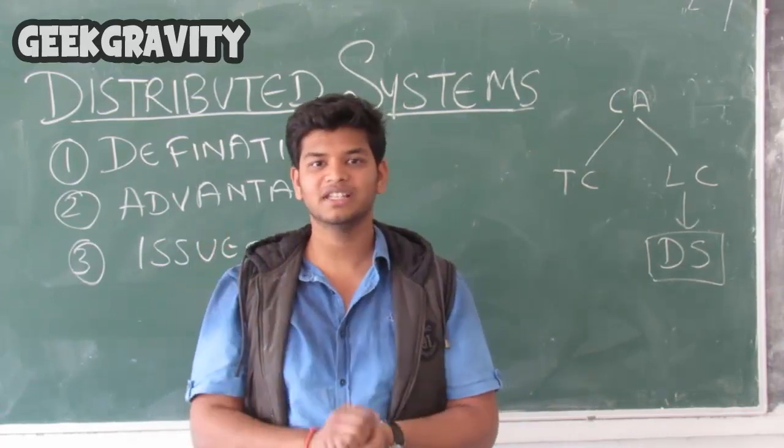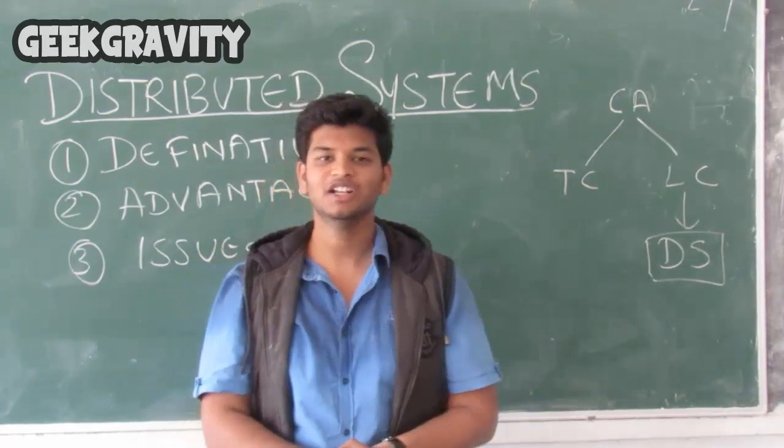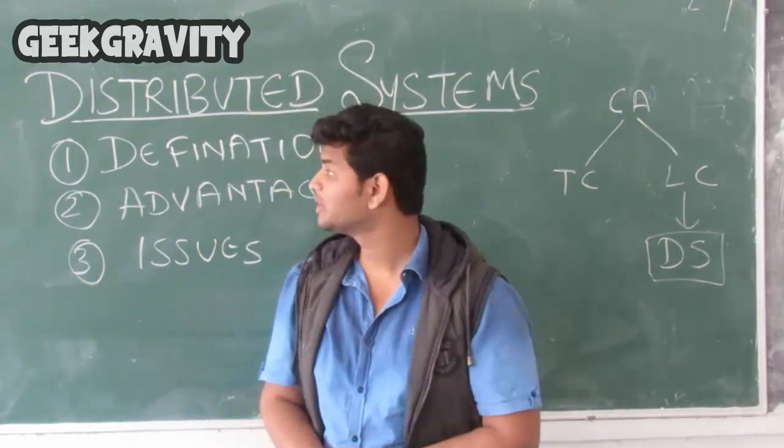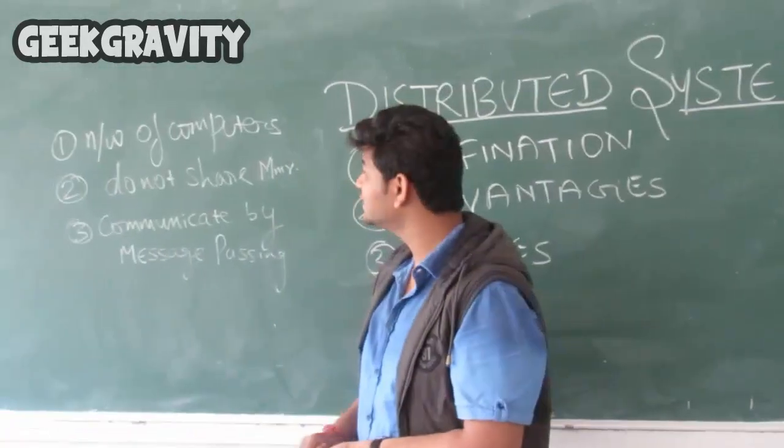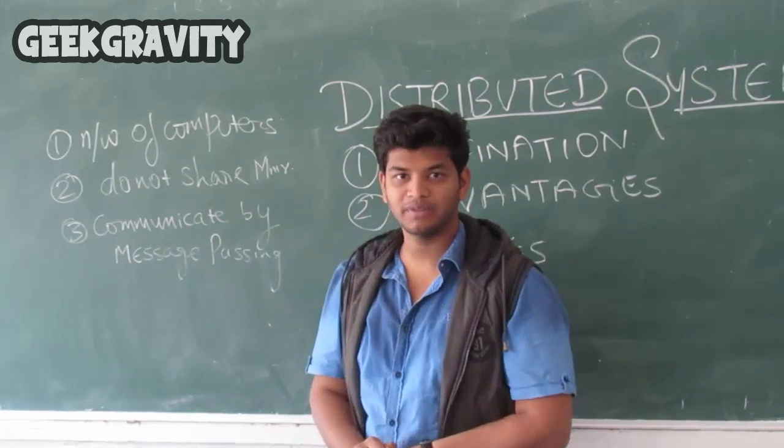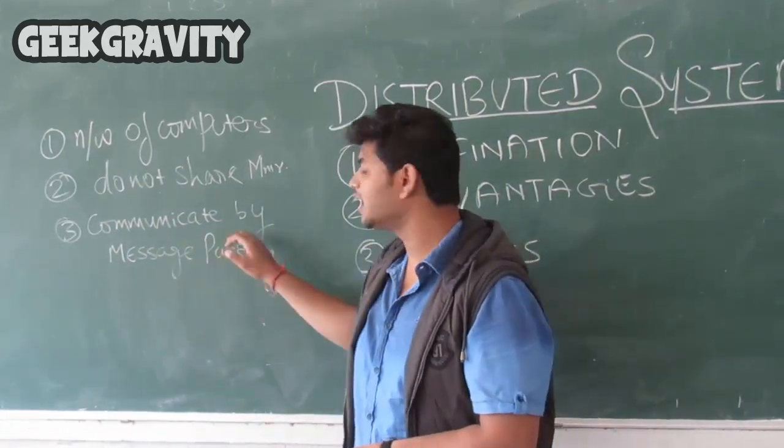There are many key terms in this definition. Let us understand them one by one. The first one is network of computers. Second is they do not share common memory. And the third one is they communicate by message passing.